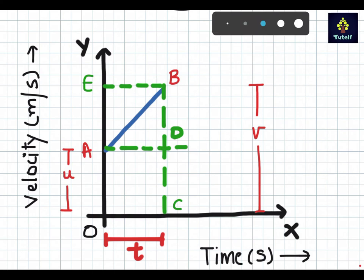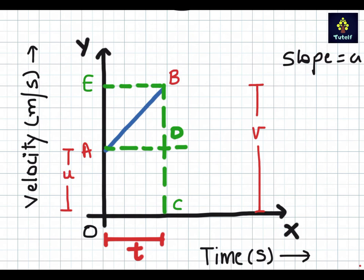As we have studied in the graph chapter, the slope of a velocity-time graph gives us the acceleration. And the area under the graph gives us velocity into time, which is distance with direction, that is displacement. I hope this part is clear to you.